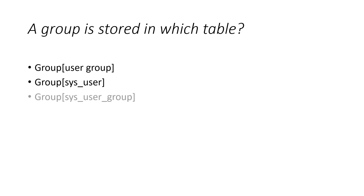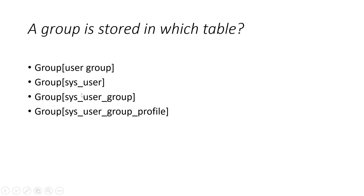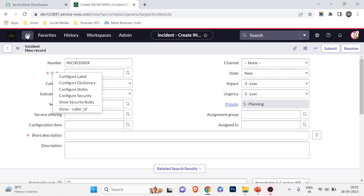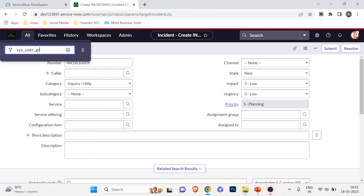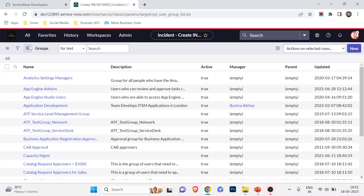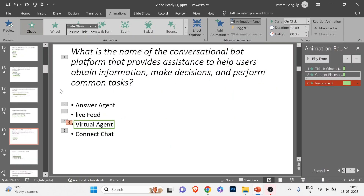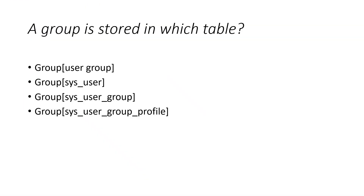Question six: a group is stored in which table? The first option is not the answer; sys_user is the user table name; sys_user_group_profile is not a table name. The correct answer is number three: sys_user_group. If I navigate to sys_user_group.list, you can see the Groups table opens. So the right answer is sys_user_group.